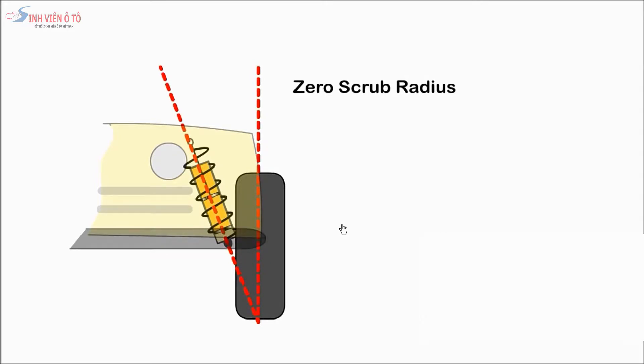Scrub axis is the distance between the steering axis road contact point and the center of the wheel. When both meet at the same axis, it's called zero scrub. When the steering axis point is towards the inside of the wheel, it's called positive scrub radius.